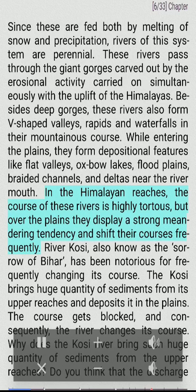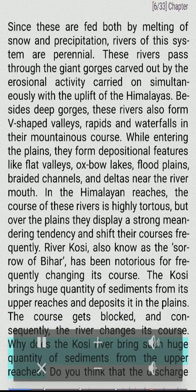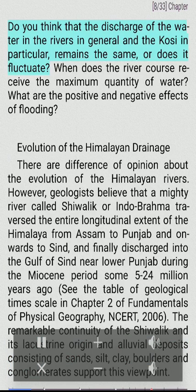In the Himalayan reaches, the course of these rivers is highly tortuous, but over the plains they display a strong meandering tendency and shift their courses frequently. The river Kosi, also known as the 'Sorrow of Bihar,' has been notorious for frequently changing its course. The Kosi brings huge quantities of sediments from its upper reaches and deposits them in the plains, causing the course to get blocked and the river to change its course.